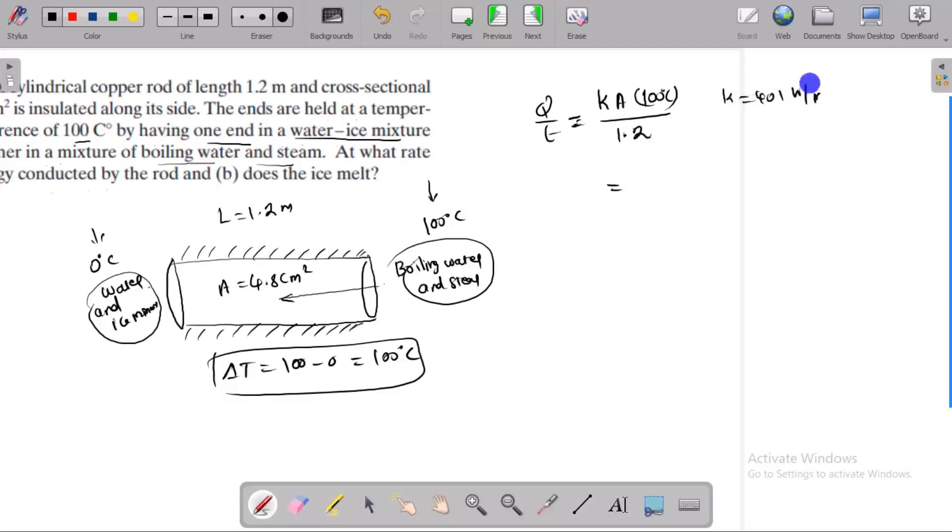401 watts per meter. So 401, area of the copper is 4.8 centimeters converted into meters, and the temperature difference is 100 Kelvin, because 401 in terms of Kelvin, then Kelvin divided by 1.2.